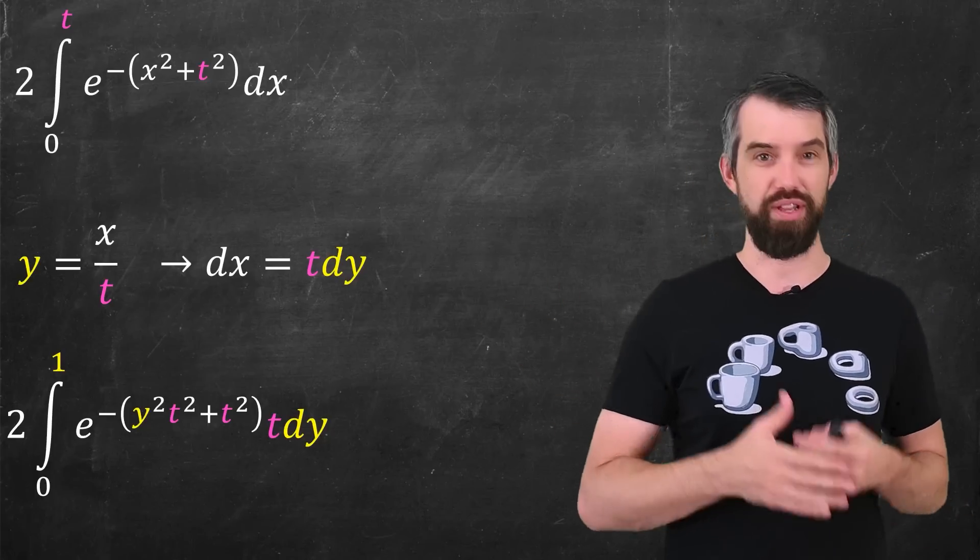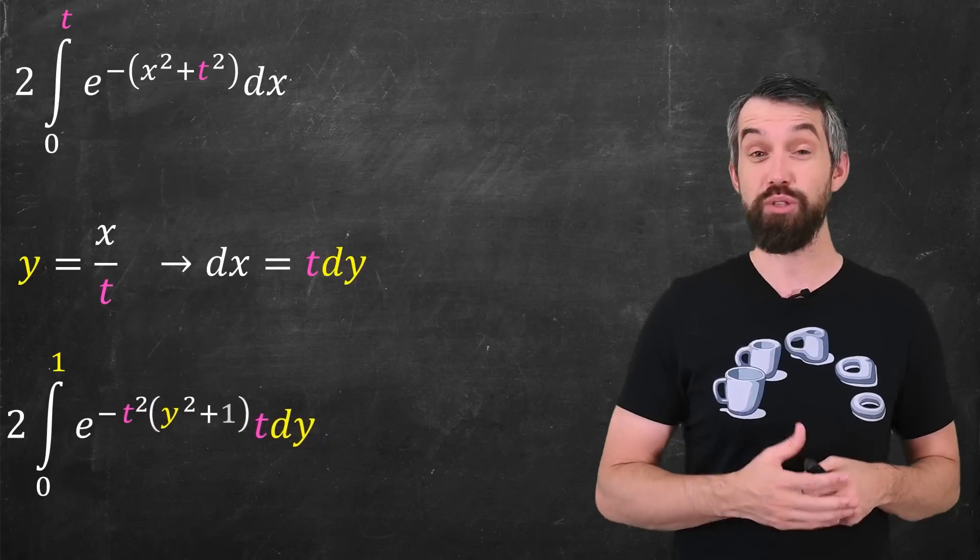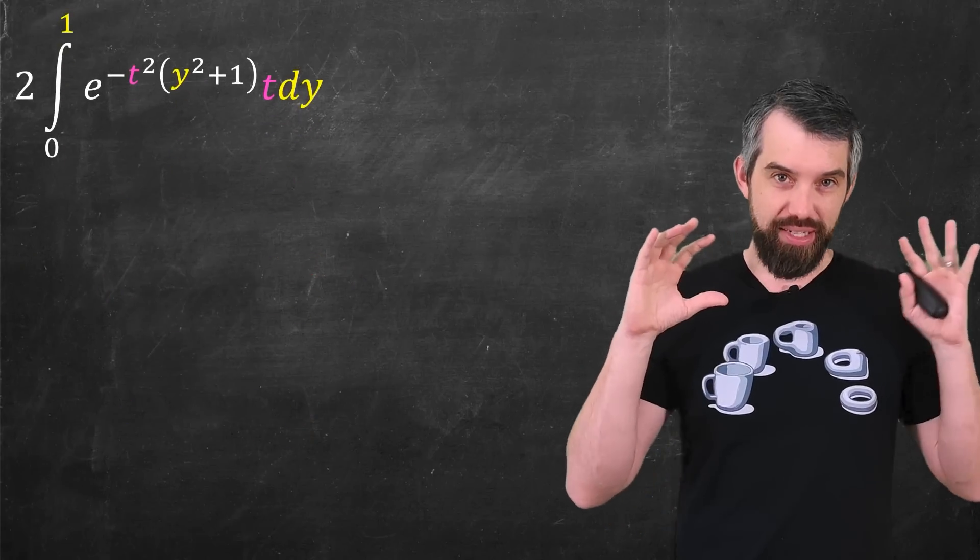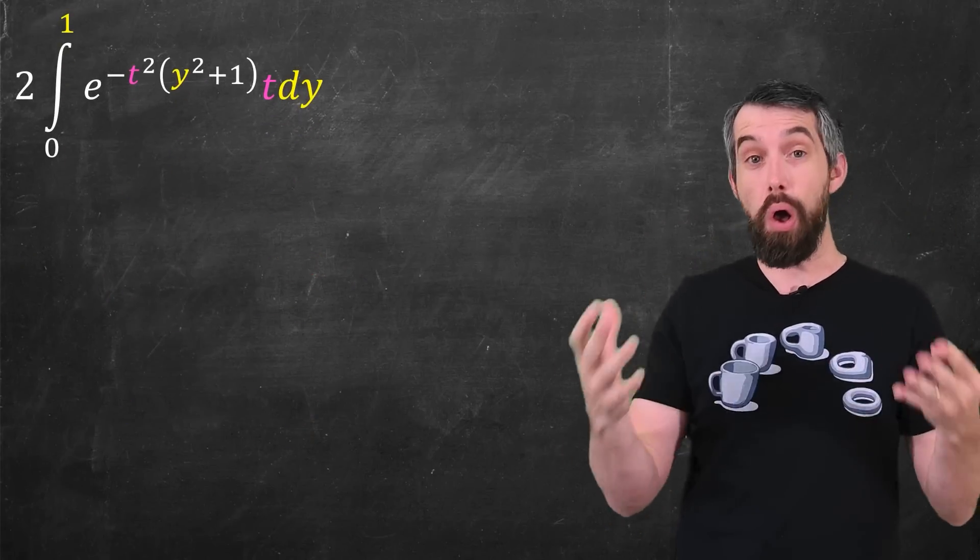In my exponent here, the t squared appears twice, so I may as well pull that out. And this is the expression that I have now gotten, something where the entire mess to do with t's is all in the integrand.